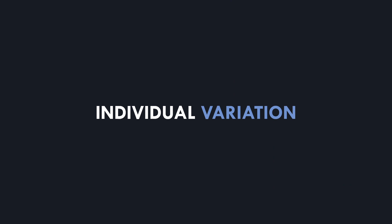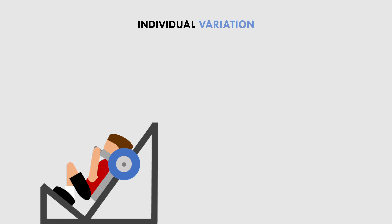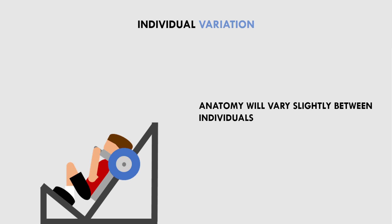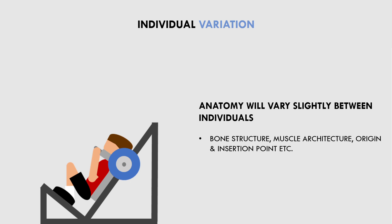It should also be noted that there is likely to be some individual variation between trainees. The general anatomy of everyone is fairly similar, although there are certainly differences in structure. Factors such as bone structure, muscle architecture, and origin and insertion points can all vary quite substantially between individuals. We will discuss how individual variation in anatomy influences exercise selection in another video from this series, but for now it should just be noted that some exercises may be better or worse suited to different people.